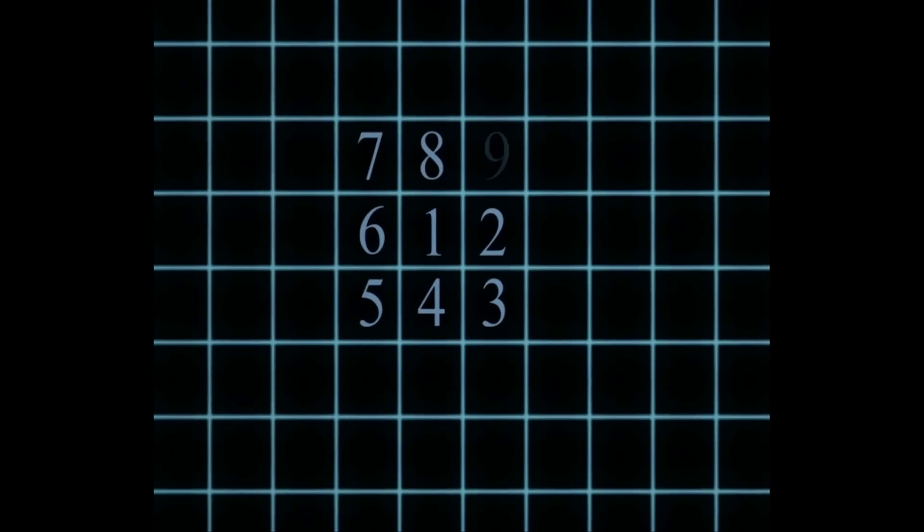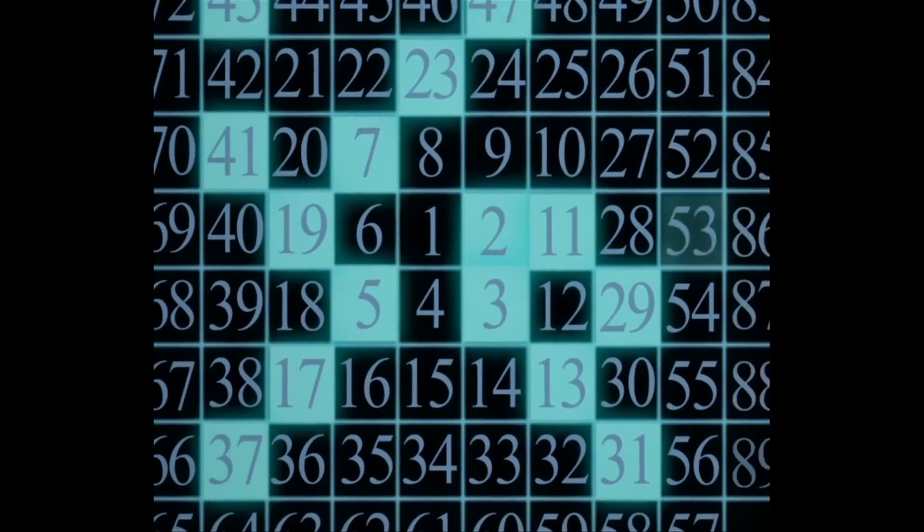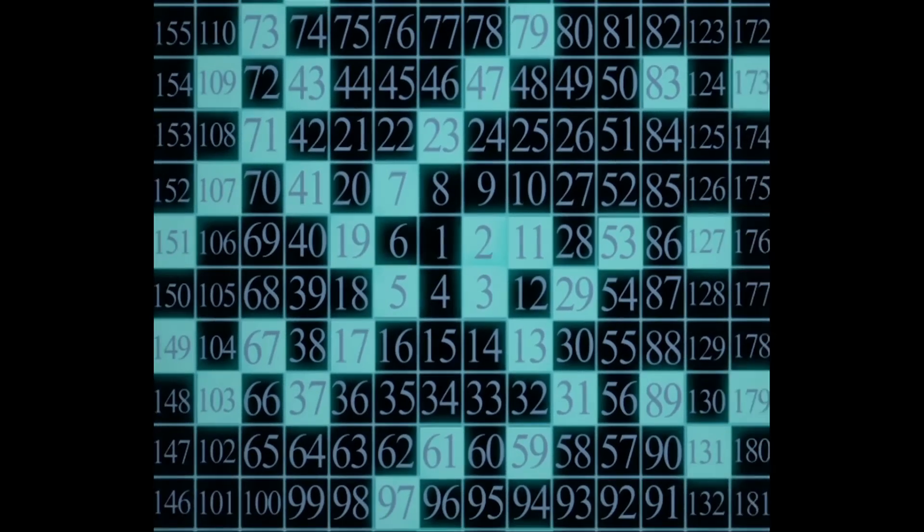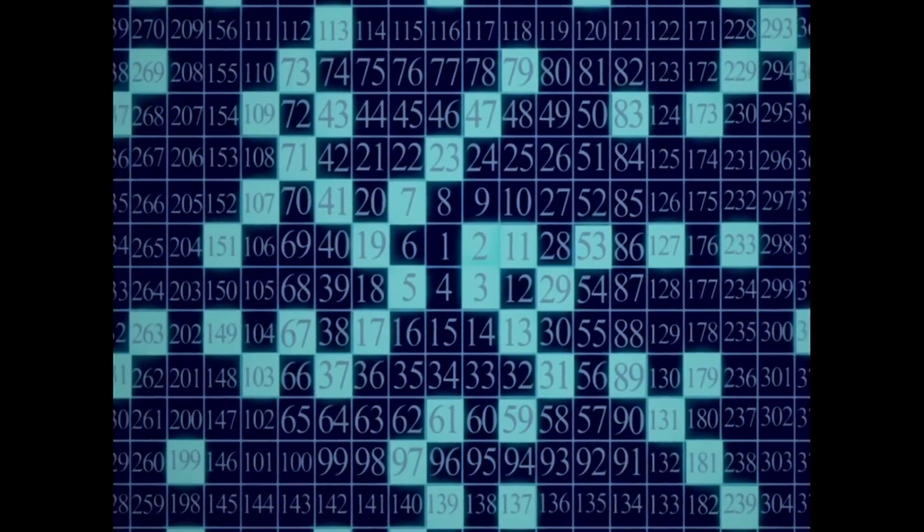Imagine we listed all integers in a growing spiral and colored the prime numbers blue and left the composite numbers black. One interesting question we may ask is how many primes are there compared to composites?